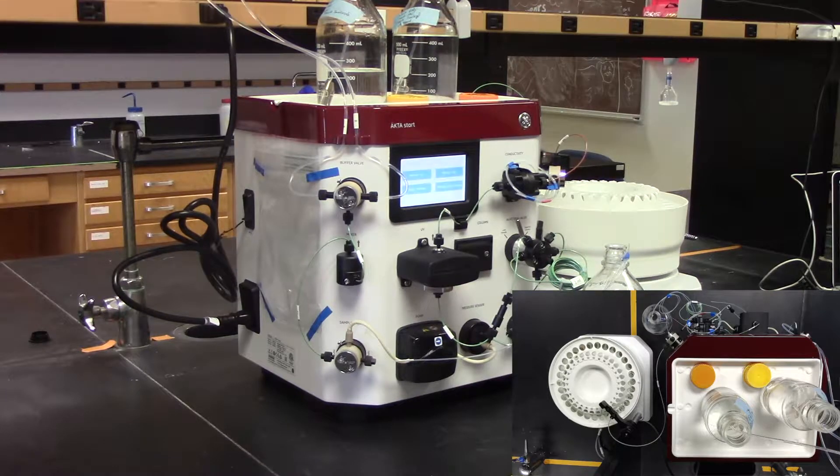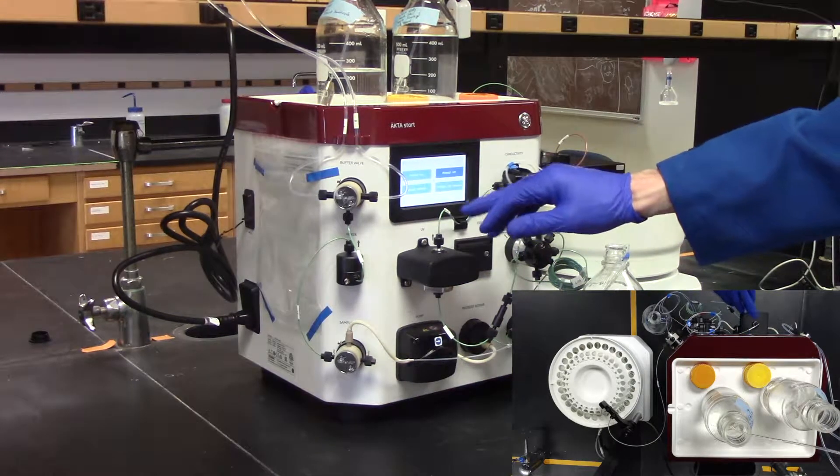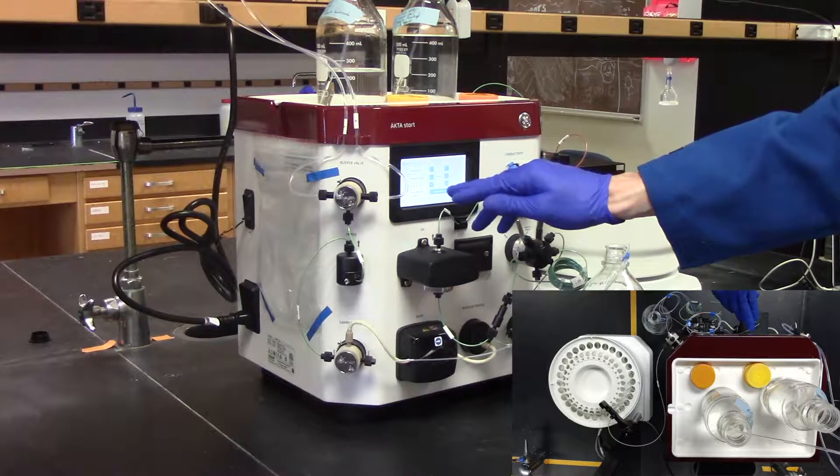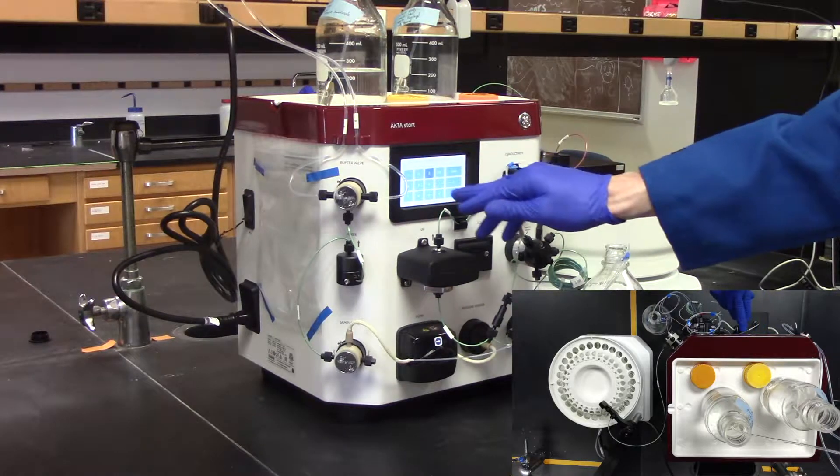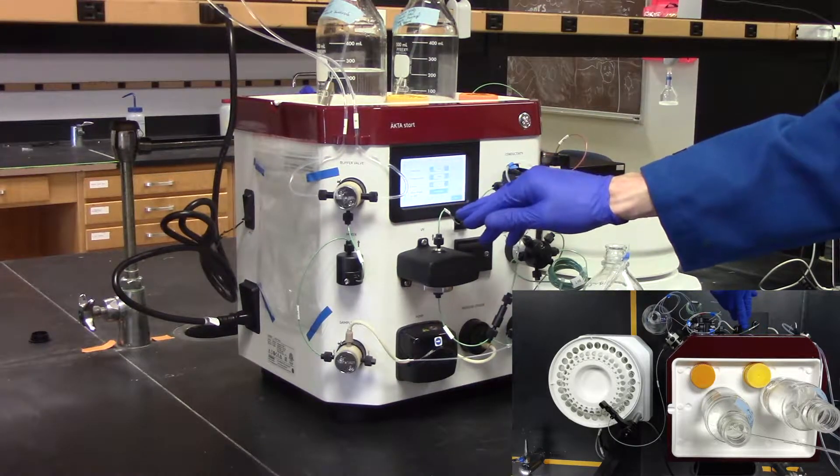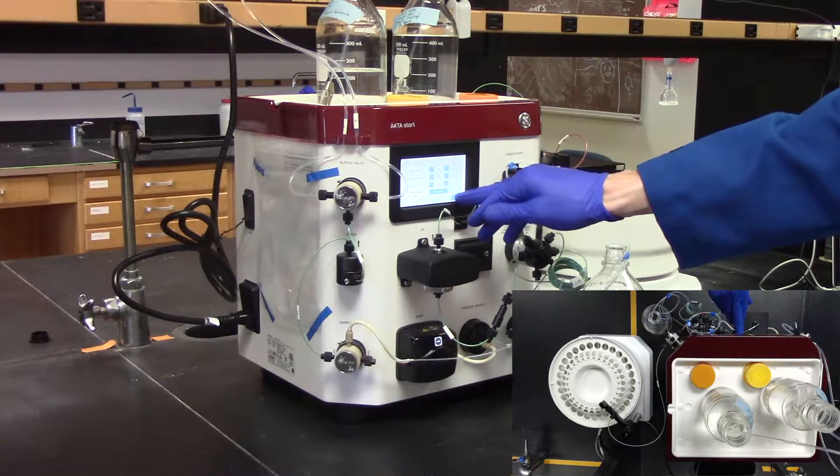Purge the A line by accessing the manual run screen and increasing the flow rate to 3 mls per minute. Be sure no air bubbles are in the line. To purge the B line, increase the concentration to 100%.